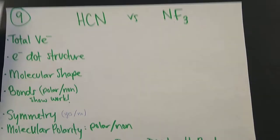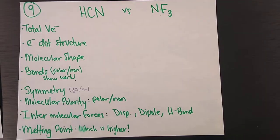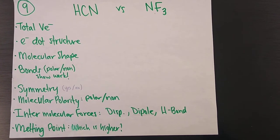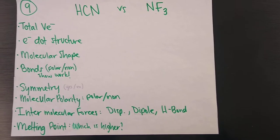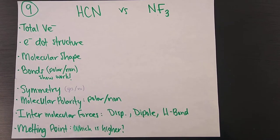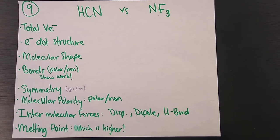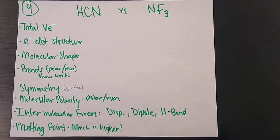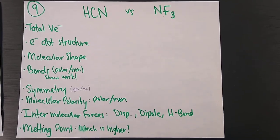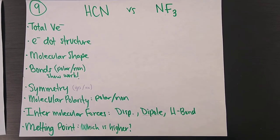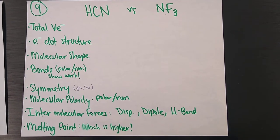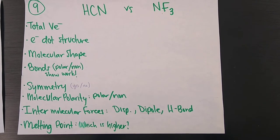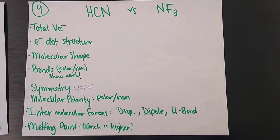Okay and then our last question is what we were doing on the shapes lab. You're going to take HCN and NF3 and you're going to go through the entire shapes lab process. Total valence electrons in the molecule. The electron dot structure or the Lewis structure. Molecular shape of the molecule. Bonds. Are the bonds polar or nonpolar? Make sure you show your work for the bonds. A little subtraction problem. Symmetry. Is the molecule symmetrical? Yes or no. And then molecular polarity. Is the molecule as a whole polar or nonpolar? Which intermolecular forces are present in the molecule? Dispersion, dipole, hydrogen bonding. Okay, so it could be all three of them. It could be two of them. It could be you address each one. And then finally melting point. Which one of those two compounds has a higher melting point?